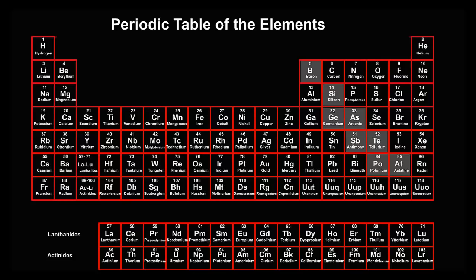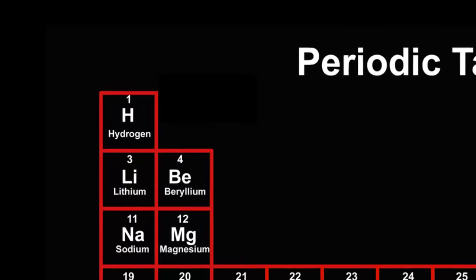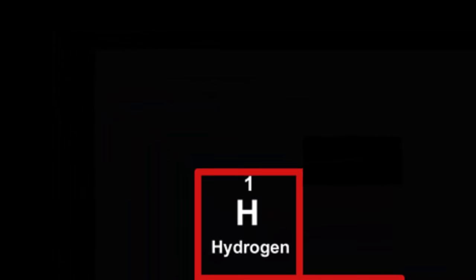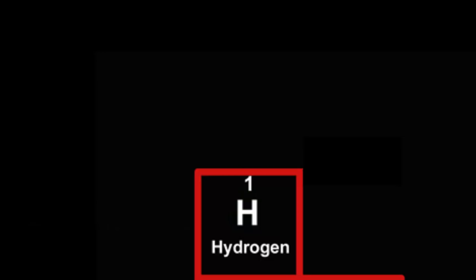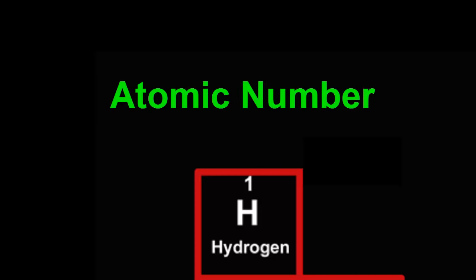The lightest element, hydrogen, is at the top left hand side of the table. Each element can be written with a shorthand using one or two letters called its symbol, which is capital H for hydrogen, not surprisingly. Each element also has its own number showing its place in this list, called its atomic number. Hydrogen is the lightest element, so its atomic number is 1.